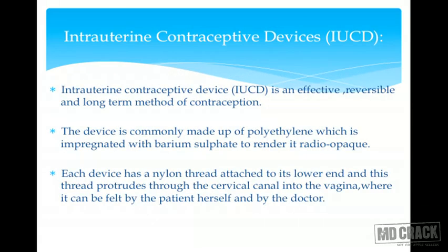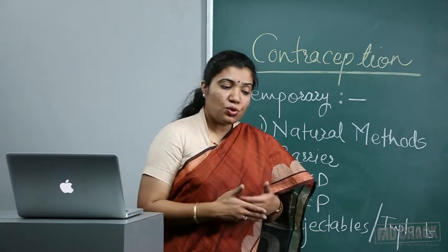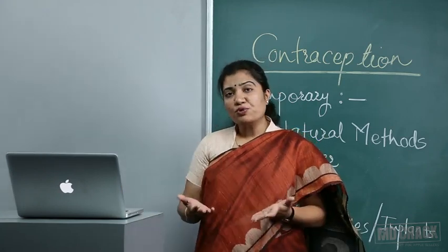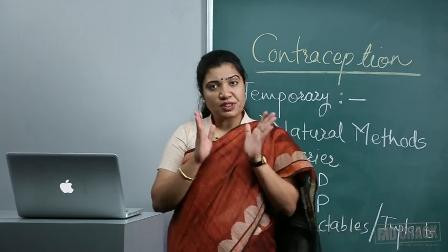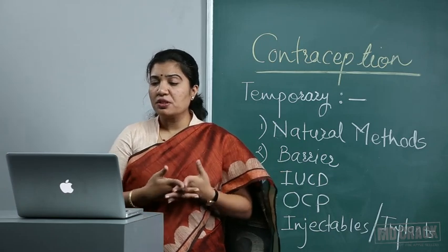Intrauterine contraceptive devices (IUCDs) are effective, reversible, and long-term methods — each act of coitus does not require a new device. They are commonly made of polyethylene impregnated with barium sulfate to make them radiopaque, so their position can be confirmed on X-ray or ultrasound. A nylon thread attached to the lower end protrudes through the cervical canal into the vagina, allowing the patient or gynecologist to confirm the device is in place.